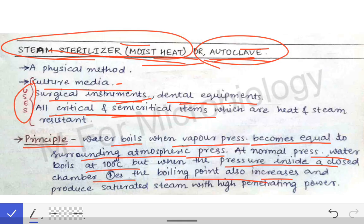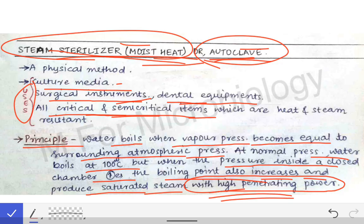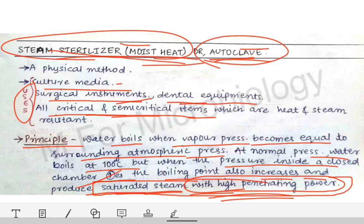The same principle is used here. When the whole system is closed, it produces very high saturated steam with a very high penetrating power. This is the main point of the autoclave — everything the autoclave does is done by this steam with very high penetrating power, which helps in all its functions.